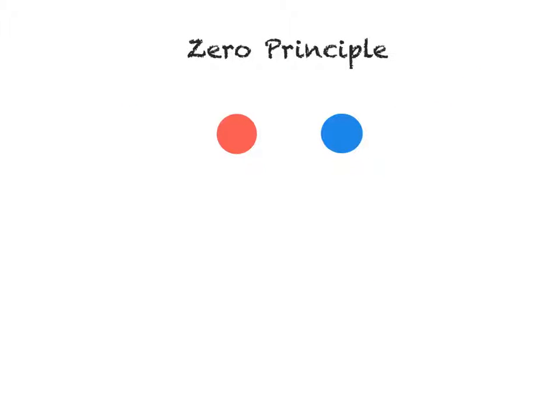To understand how the counters work we have to be comfortable with the zero principle. The zero principle basically states that if I have one positive number and one negative number that are exact opposites from each other, meaning they are the same number but one is positive one is negative, or equal distances from zero but on opposite sides, and you put those two numbers together you add them together you're always going to get zero.